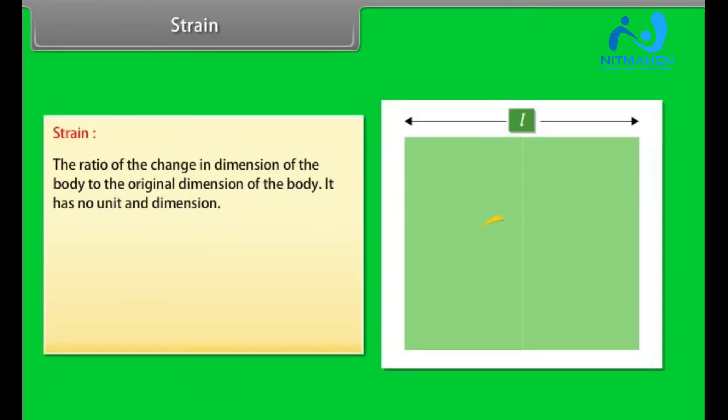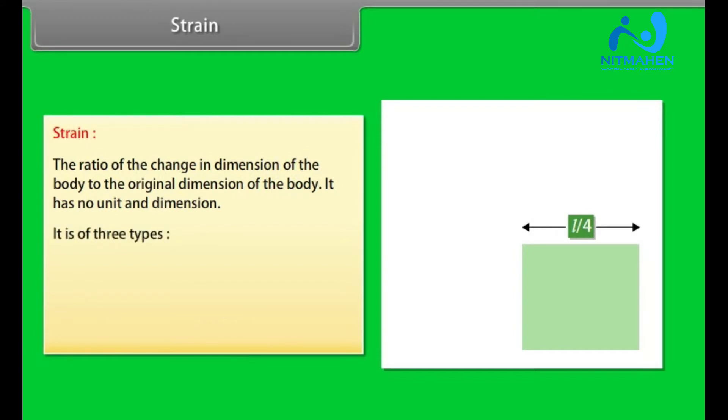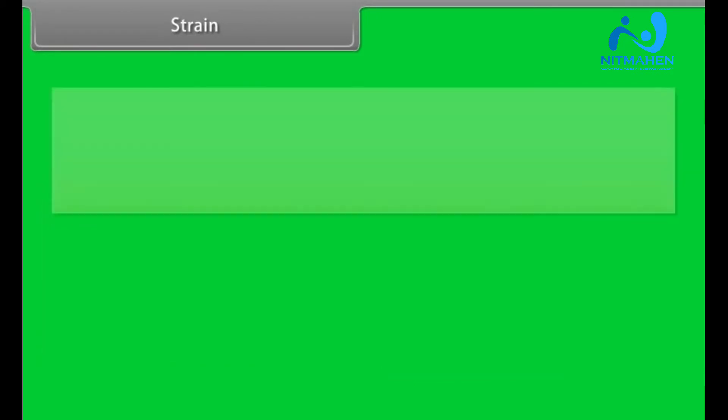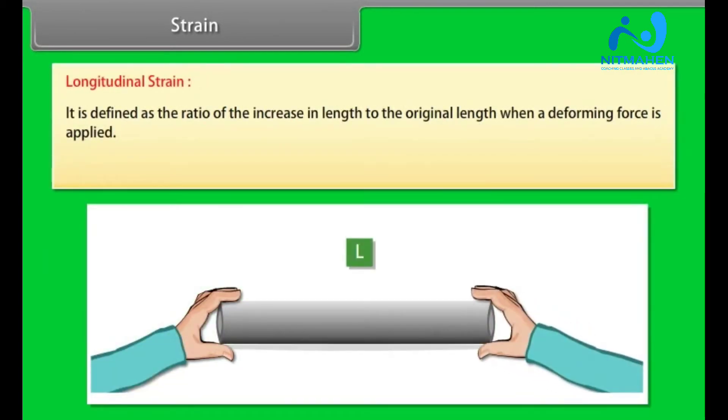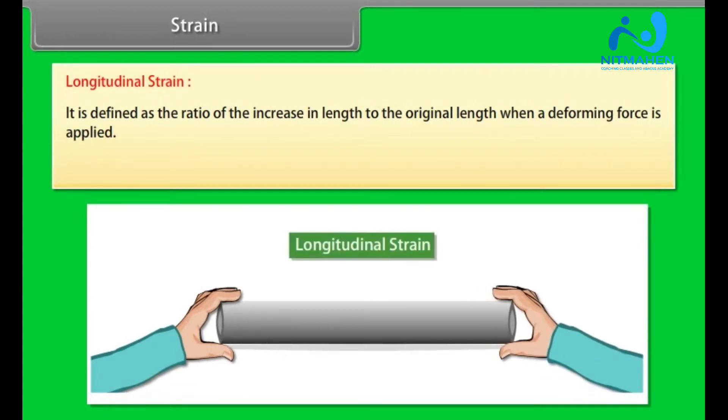Strain. Strain is defined as the ratio of the change in dimension of the body to the original dimension of the body. It has no unit and dimension. It is of three types: longitudinal strain, volumetric strain, and shearing strain. Longitudinal strain is defined as the ratio of the increase in length to the original length when a deforming force is applied. Longitudinal strain is equal to ΔL by L.